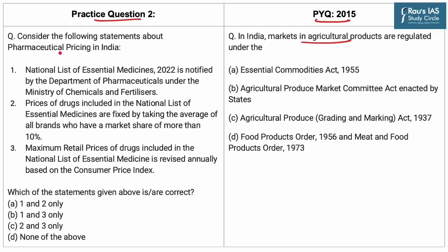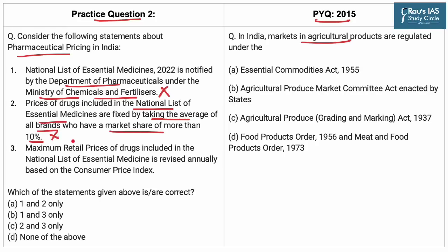Consider the following statements about pharmaceutical pricing in India. Statement 1: National List of Essential Medicines 2022 is notified by the Department of Pharmaceuticals under the Ministry of Chemicals and Fertilizers. This statement is incorrect because it is the Ministry of Health and Family Welfare that notifies the National List of Essential Medicines. Statement 2: Prices of drugs included in the National List of Essential Medicines are fixed by taking the average of all brands who have a market share of more than 10%. This statement is also incorrect because the government fixes prices based on the average of all brands with a market share of 1% or more, not 10%.